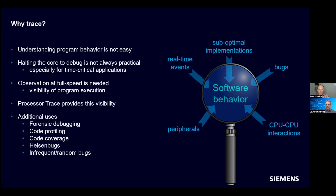What we have here is the reason why people need to trace. The main reason is that understanding program behavior in complex systems is a big challenge. It's often very impractical to halt the core to debug the software, and that's especially true in real-time systems where those systems do not wait when the core is halted. What's required is a non-intrusive method of observing program behavior at full speed — enabling you to see exactly how the program executes and how it's responding to real-time system events. And that's what Processor Trace is.